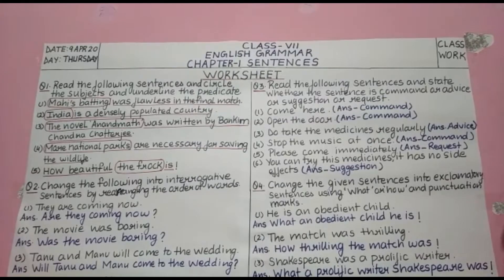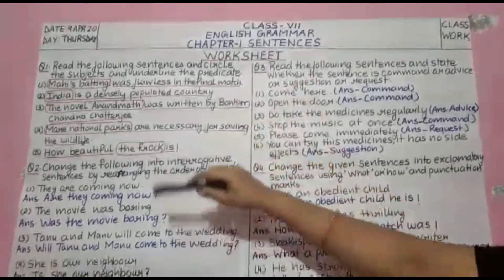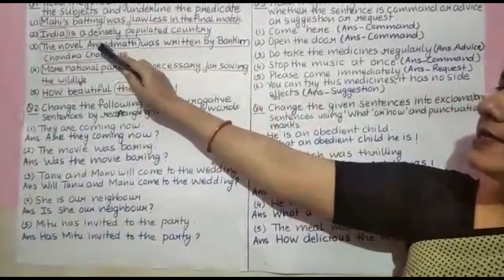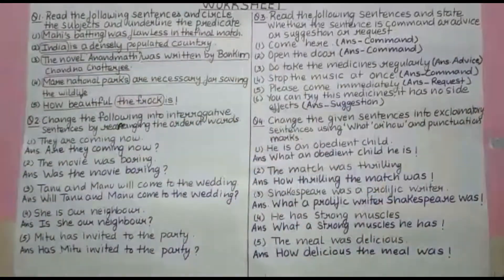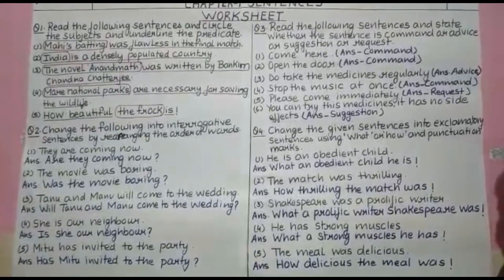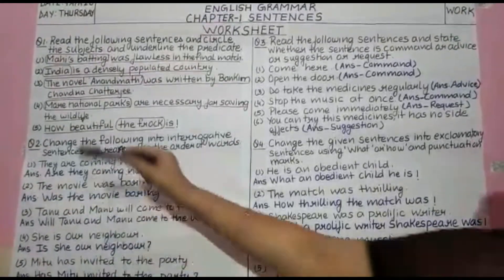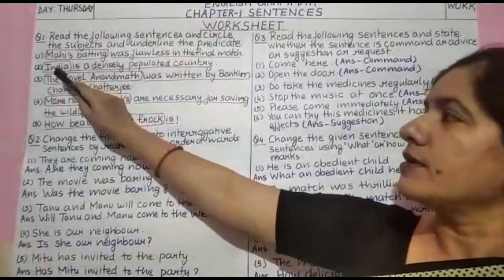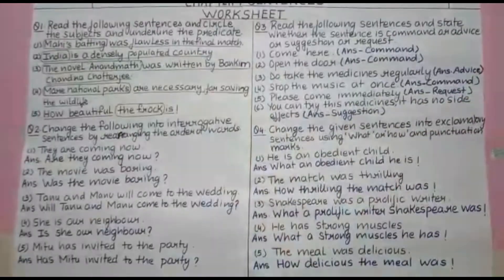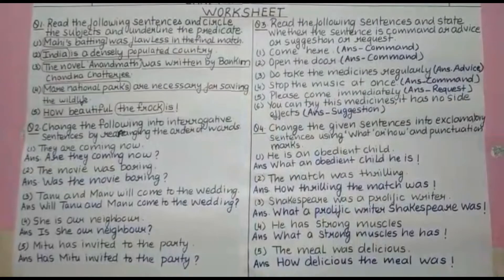Second: 'India is a densely populated country.' In this sentence, the sentence is telling about India, a name of a country, so 'India' is the subject. 'Is a densely populated country' is the predicate, because we are telling about India in this sentence.